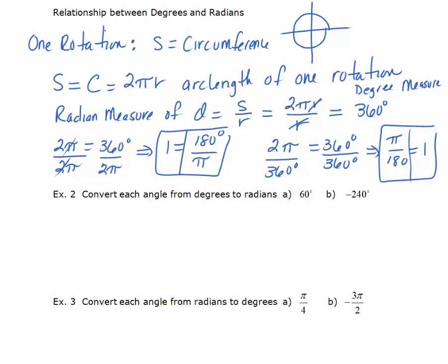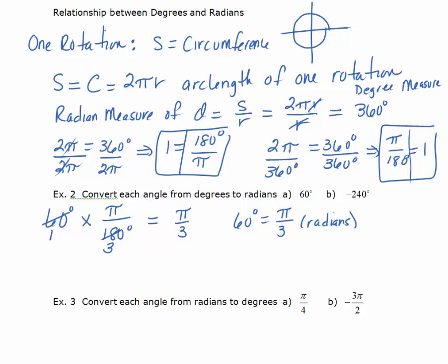Example: convert each angle from degrees to radians. For 60 degrees, multiply by the conversion factor that has degrees in the denominator: 60 degrees times π over 180 degrees. Reduce: 60 goes into itself once, goes into 180 three times. The degrees cancel, and we get π over 3. So 60 degrees equals π over 3. You don't need to write radians, since it's considered pure units — like inches over inches — so no units are written.